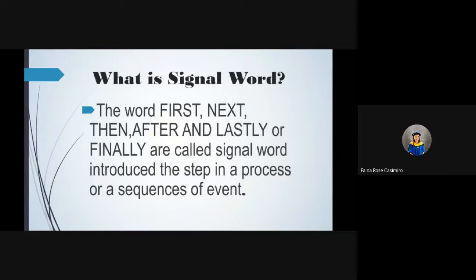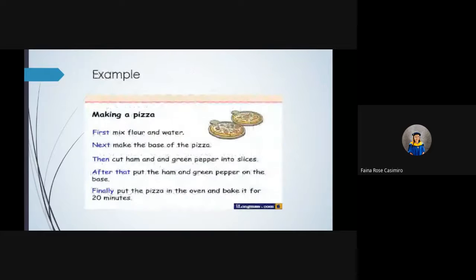I have an example in making a pizza. First, mix flour and water. Next, make the base of the pizza. Then cut ham and green pepper into slices. After that, put the ham and green pepper on the base. Finally, put the pizza in the oven and bake it for 10 minutes. Who wants to give me the signal words that they used in making a pizza? Very good.